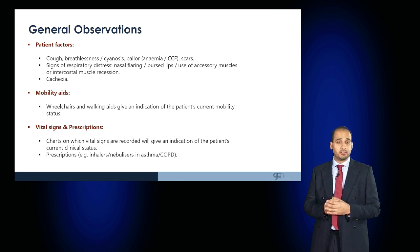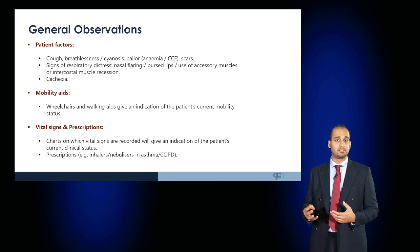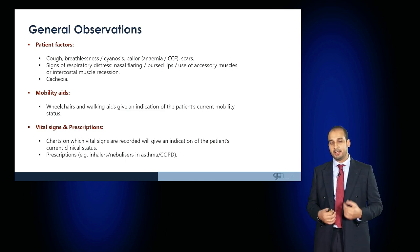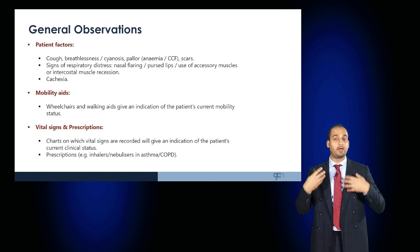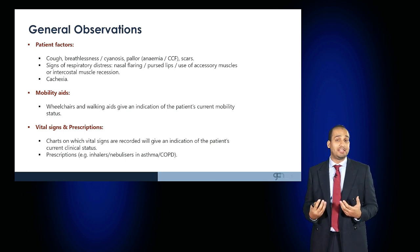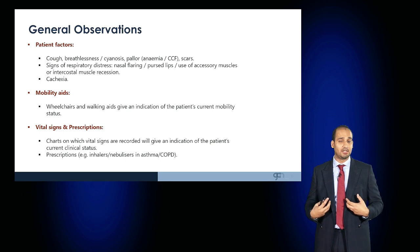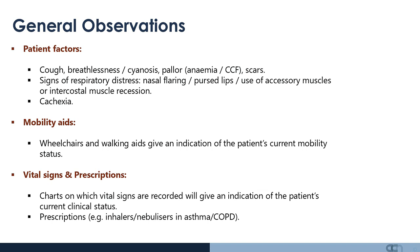Now focus on the patient. From the end of the bed, are they coughing? Do they appear breathless or cyanosed? Do they appear anaemic? Are there any obvious scars? Observe for any signs of respiratory distress — do they have nasal flaring, pursed lips? Are they using their accessory muscles such as their sternocleidomastoid or their intercostals? Is there any sign of recession or do they appear cachectic? Observe for any mobility aids such as a wheelchair or walking aids or a zimmer frame which may indicate the patient's current mobility status.